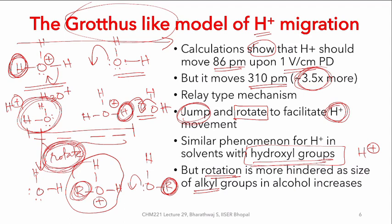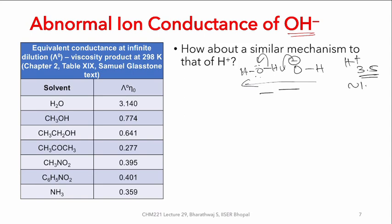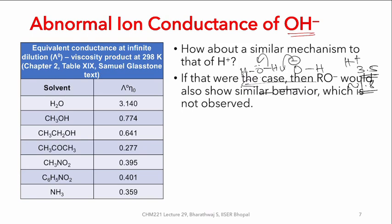One could anticipate that such anomalous behavior for hydroxyl-group-containing solvents — for instance alcohols — would end up being slower and slower as the alkyl group keeps increasing. Now we can also ask why OH⁻ in addition to H⁺ also has such anomalous behavior. You have OH⁻ on one hand and H₂O on the other. The movement here is only about two times — unlike H⁺, which is about 3.5 times more, here it is about 1.8 times more.